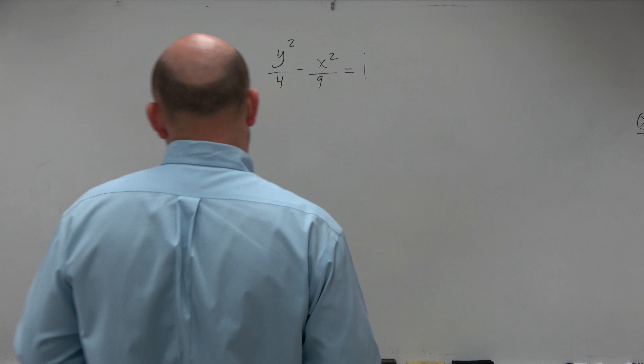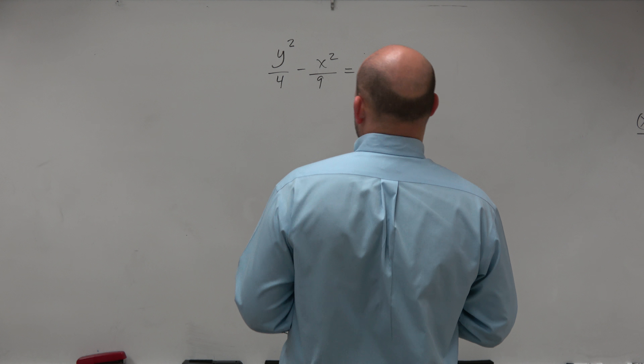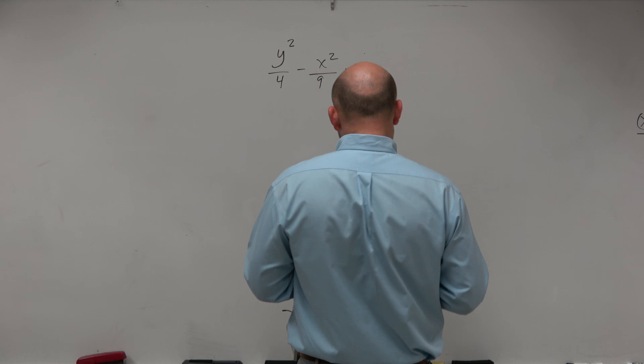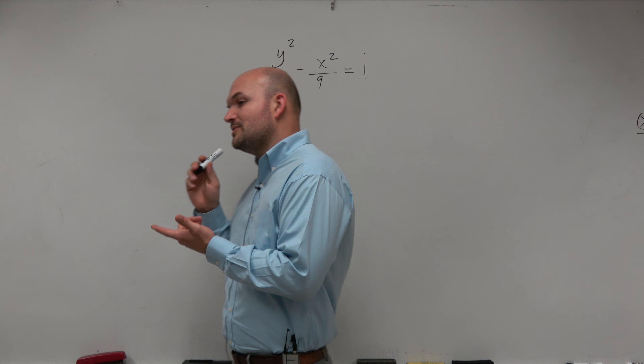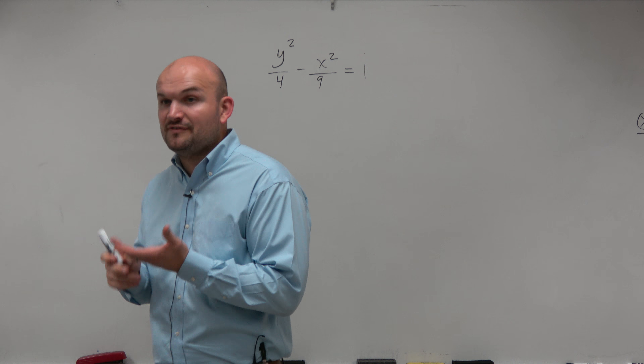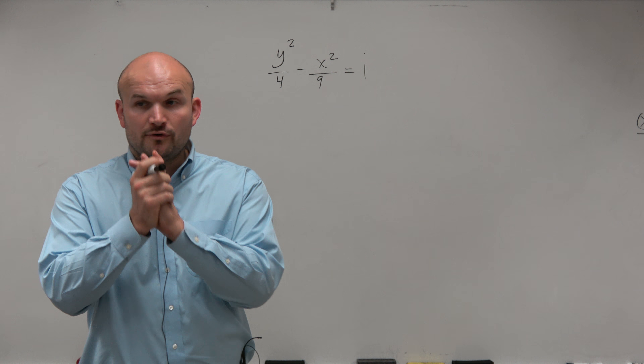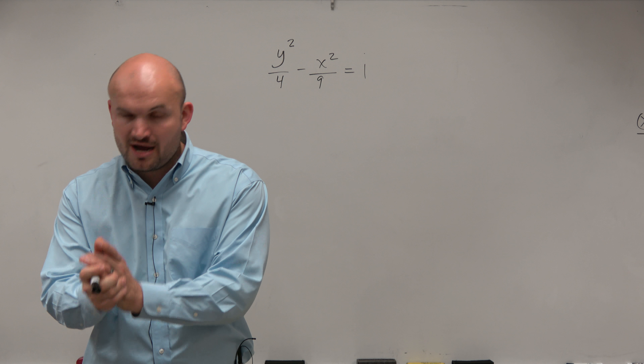We have y squared divided by 4 minus x squared divided by 9 equals 1. What we want to do is identify enough information so we can sketch the graph.